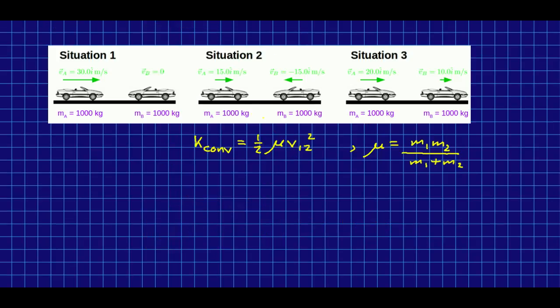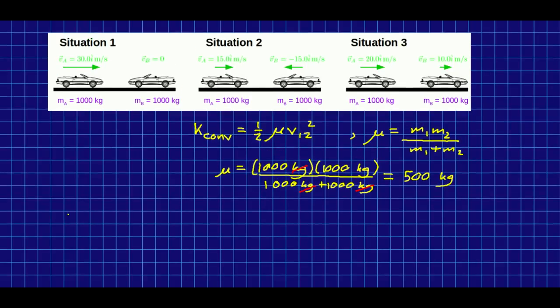So now we can return to our three situations with the cars. And see how we could have got our answer very easily. Using these expressions. So first of all, the reduced mass is the same in all three cases. Because it's the same pair of cars. And so it is just. Note the units. The kilograms take out the kilograms. But there's still one kilogram left in the numerator. And this one comes out to 500 kilograms. Notice it's smaller than the mass of either car. There's a reason this is called the reduced mass. Now that we know that, we can easily get the convertible kinetic energy.